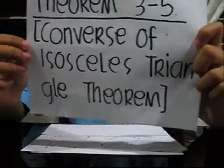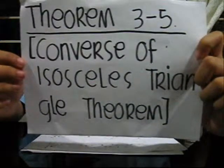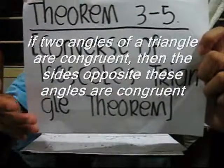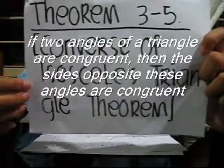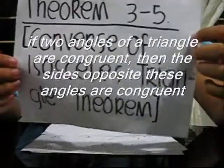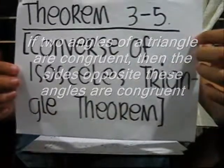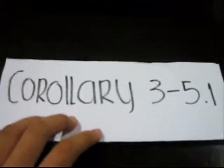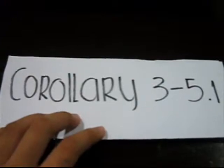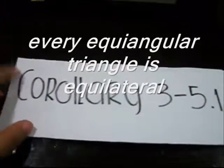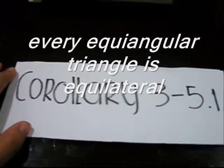Now, let's move on to Theorem 3-5, the Converse of the Isosceles Triangle Theorem. This states that if two angles of a triangle are congruent, then the sides opposite these angles are congruent. For Corollary 3-5.1, this states that every equiangular triangle is equilateral.